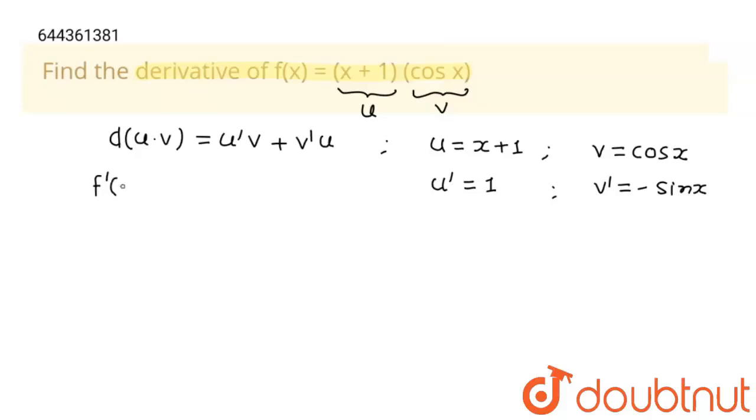Now, we can write f dash x is equal to u dash v. u dash is 1 into v. This will become cos x. Plus v dash u. v dash is minus sin x into x plus 1. So we can write this as x plus 1 into minus sin x.